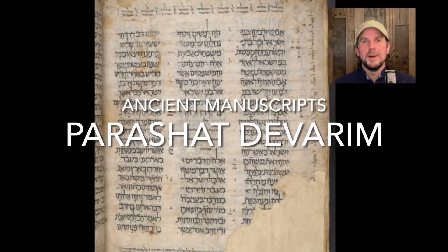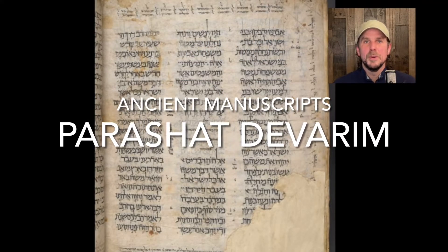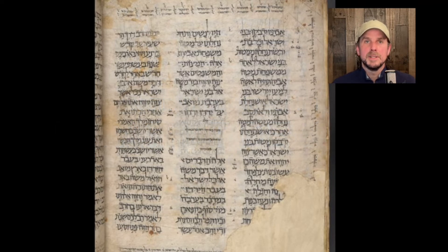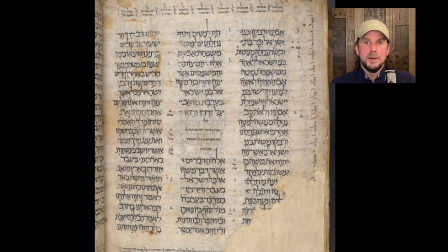Shalom, welcome to Rob on the Rock. I'm Rob Vanhoff, and today I want to share with you this manuscript. It's from the British Library, number 4445, and it is over a thousand years old — written in the 10th century. This is the end of the book of Numbers and the beginning of the book of Deuteronomy.